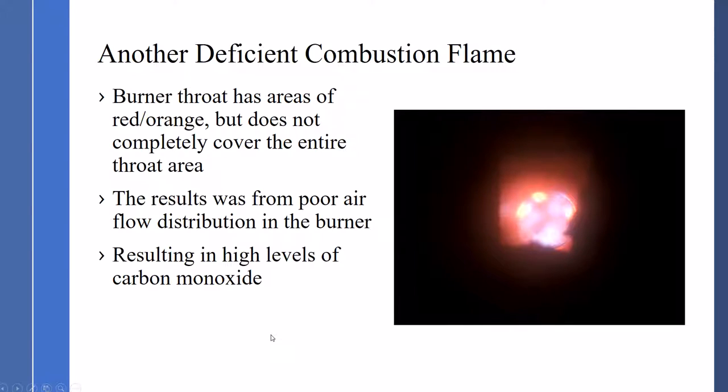This is just showing you the efficiency of the combustion flame. The burner throat area has areas of red and orange coloration, but does not completely color the entire throat area. The result was poor air flow distribution to the burner, resulting in high levels of carbon monoxide. As you can see, these are areas where it is heated and areas of poor air flow distribution.